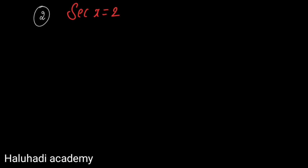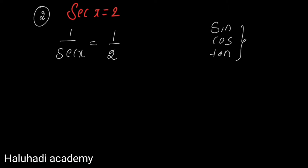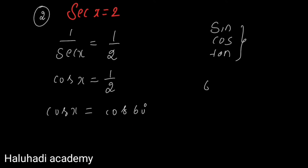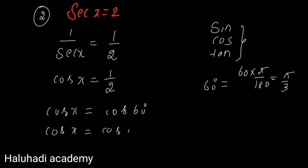Second question: sec x equals 2. Since sin, cos, and tan are easier to work with, we convert: 1/sec x equals 1/2, meaning cos x equals 1/2. From trigonometric ratios, cos 60° equals 1/2, so cos x equals cos 60°.